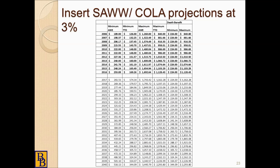Projecting 3% COLA increases, here's where our minimum average weekly earnings, minimum TTD, maximum average weekly earnings, maximum TTD, and associated minimum and maximum death benefit would project to. This sheet will be made available with the continuing education credit certificate and will be sent to you.